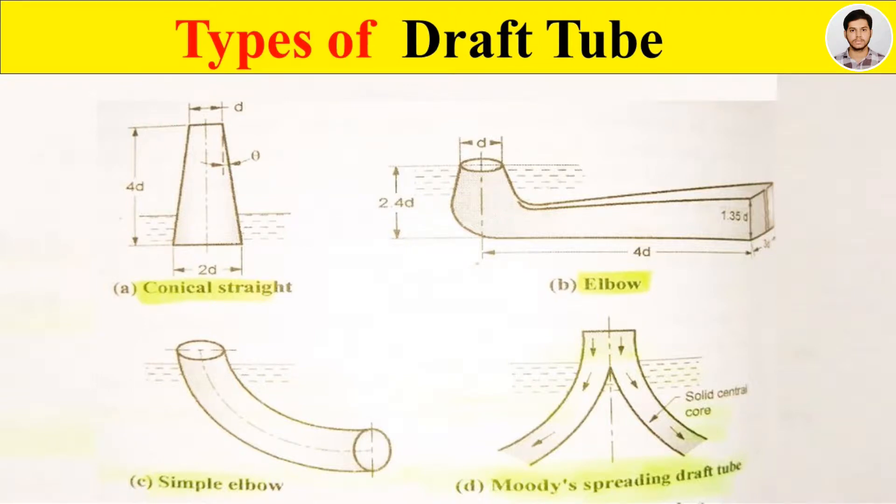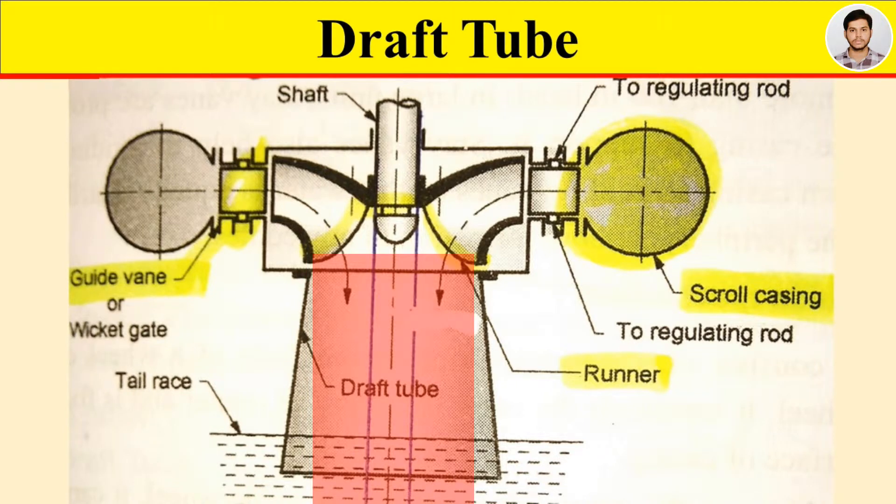Hi guys, in today's lecture we are going to see the function of draft tube and various types of draft tube. First, we see what is draft tube. Draft tube is a pipe of gradual increase in diameter which connects the exit of runner of turbine to the tailrest. Therefore, it discharges the water from runner to tailrest.